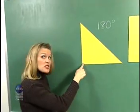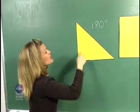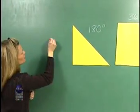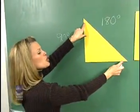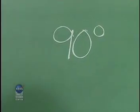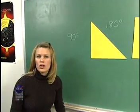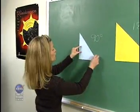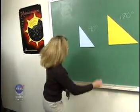Now, we know this is a right triangle. This equals 90 degrees. If we subtract that from 180, we get 90 degrees. These two angles must add up to 90 degrees. This is true for every right triangle — it's true for this right triangle, and it's even true for right triangles that look like this.